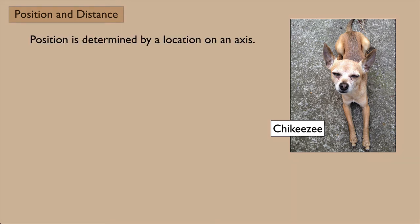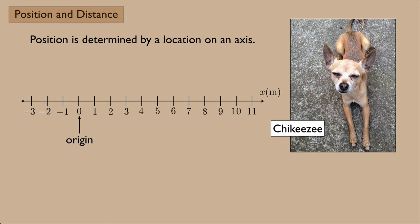Position is determined by a location on an axis when we're talking about one dimension. For one-dimensional motion, we can make an axis and put a zero somewhere on it, which we call the origin. To the right of that zero we can label one, two, three, four, and so on. To the left we can label some negative numbers. We'll label this axis x and give it units of meters.